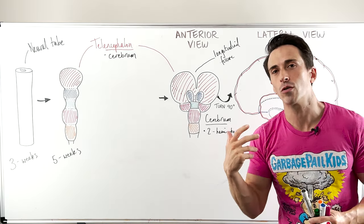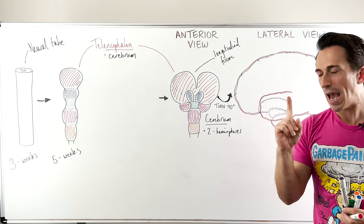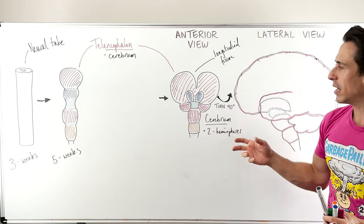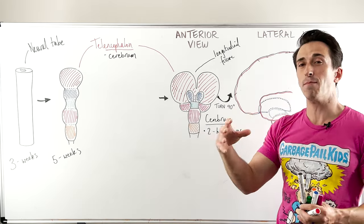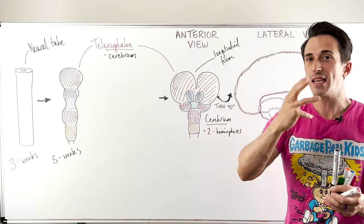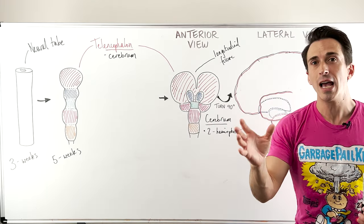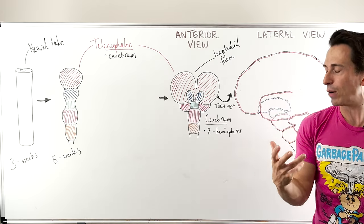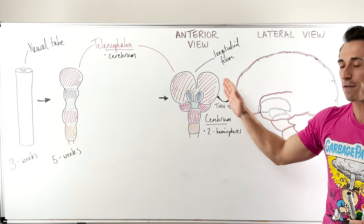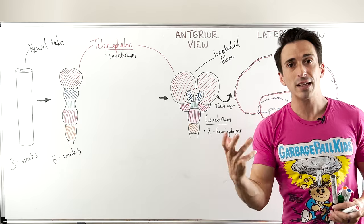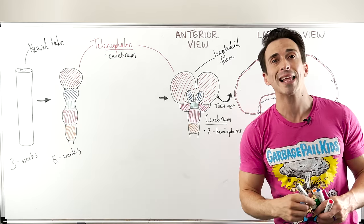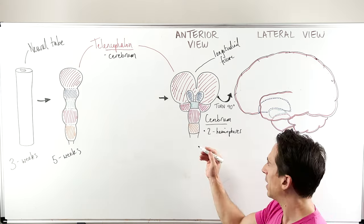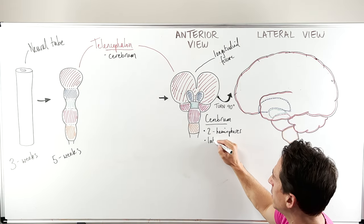Right controls left, left controls right. Another important point is that some functions of the brain actually sit more so on one hemisphere than the other. For example, for most of us, language — being able to understand and comprehend language — sits predominantly on the left hemisphere. This is termed laterality, where functions predominantly sit on one side compared to another.